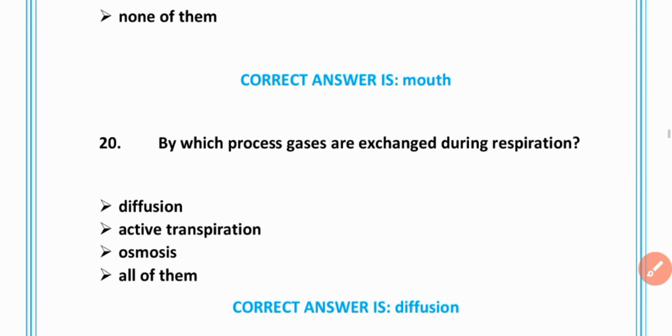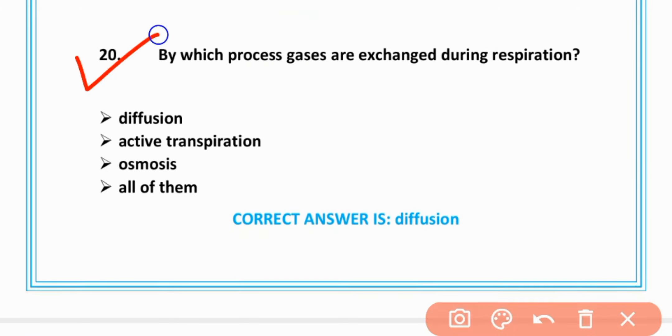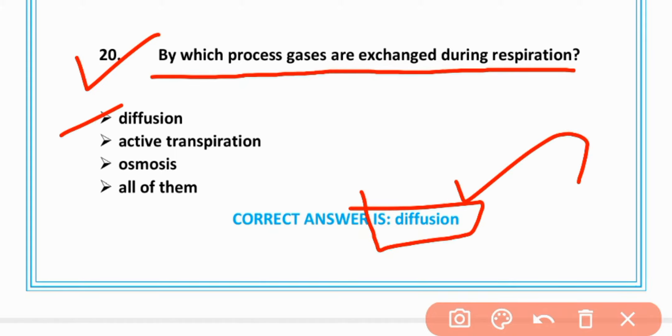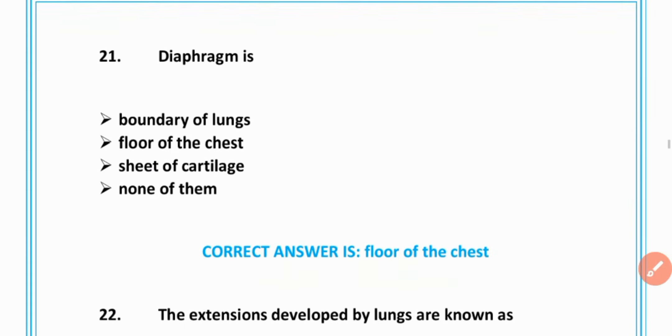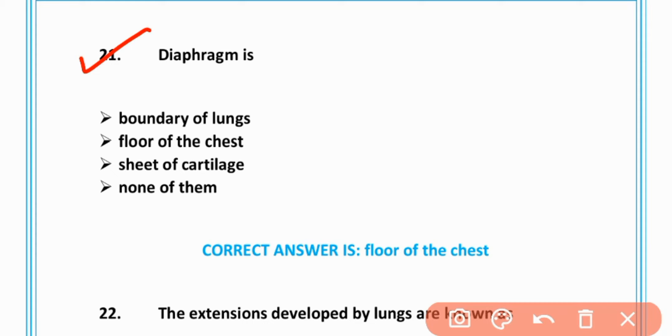MCQ number 20: By which process are gases exchanged during respiration? Diffusion, option D is correct. MCQ number 21: Diaphragm is floor of chest, option B is correct.